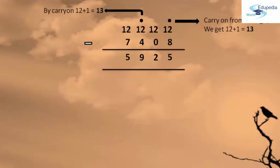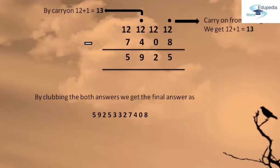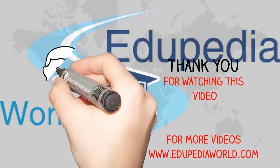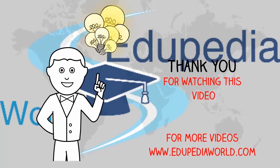By combining all the digits — 5, 9, 2, 5 and 3, 3, 2 and 7, 4, 0, 8 — you get the final answer. Therefore, 6,666,666 into 8,888 equals 59,253,327,408. This is the way to use Case Number 2 Varta Siddhantam Chudamani Sutram to find the product when the number of digits in the multiplier or multiplicand are different. I hope you have understood how to use Case Number 2. Thank you.